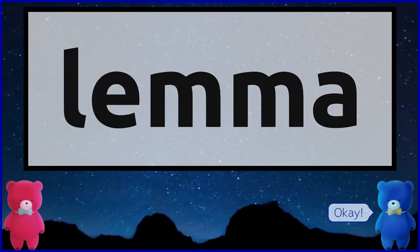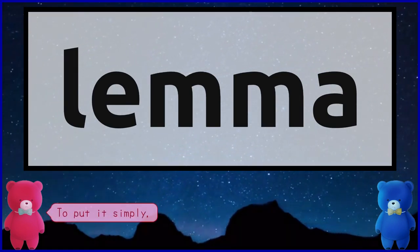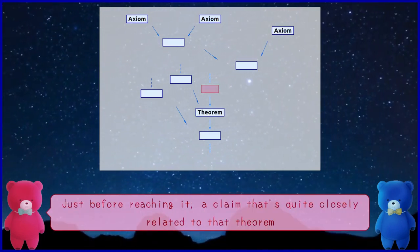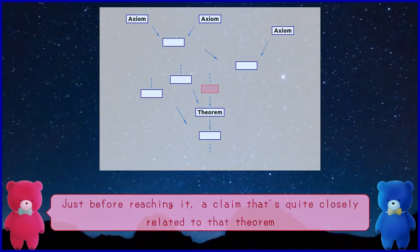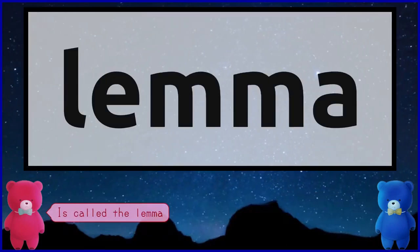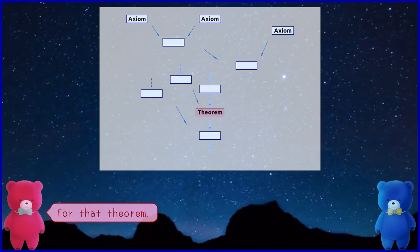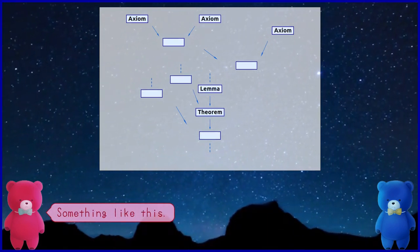Okay. To put it simply, when you're proving a theorem, just before reaching it, the claim that's quite closely related to that theorem is called the lemma for that theorem. Something like this.